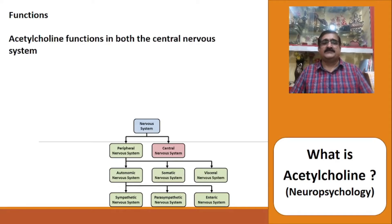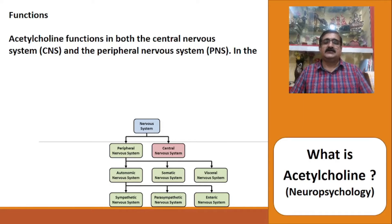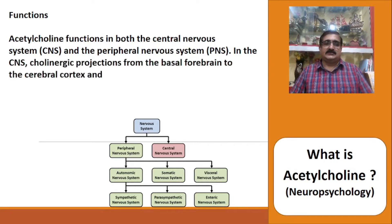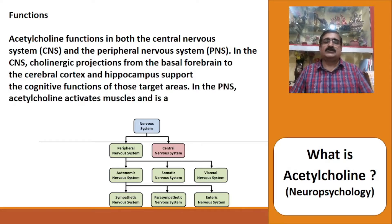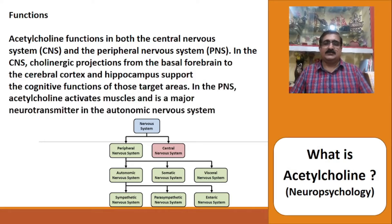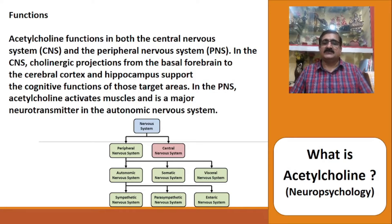Functions of acetylcholine in both the central nervous system (CNS) and the peripheral nervous system (PNS): In the CNS, cholinergic projections from the basal forebrain to the cerebral cortex and hippocampus support the cognitive functions of these target areas. In the peripheral nervous system, acetylcholine activates muscles and is a major neurotransmitter in the autonomic nervous system.